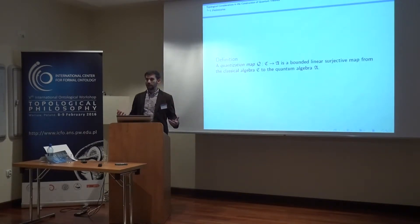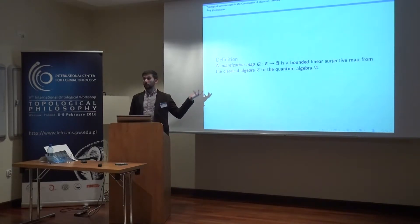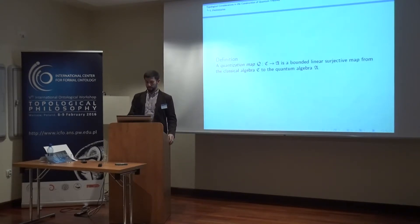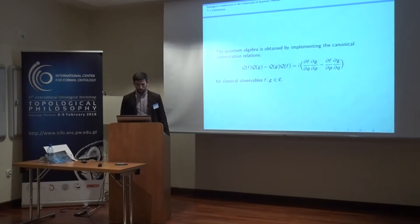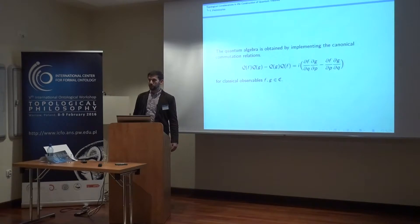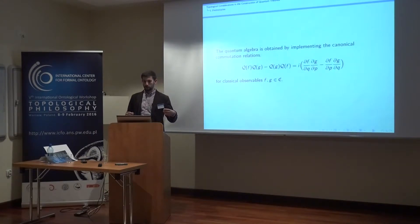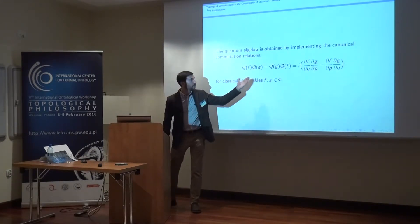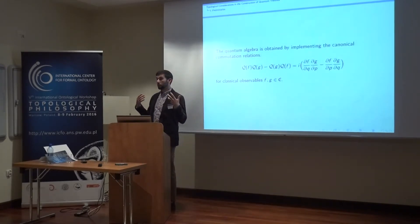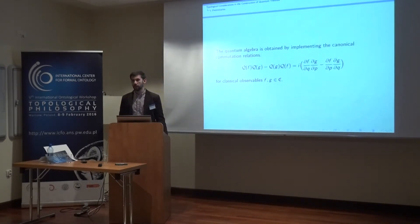We can use this classical algebra of observables to construct an algebra of quantum quantities or observables. We're going to use what I'll call a quantization map Q — a bounded, linear, surjective map from our classical algebra C to a quantum algebra A. This quantum algebra A is obtained from the classical algebra by keeping everything the same except for the multiplication relation. Our new multiplication relation implements what are called the canonical commutation relations, which tells us that position and momentum do not commute.